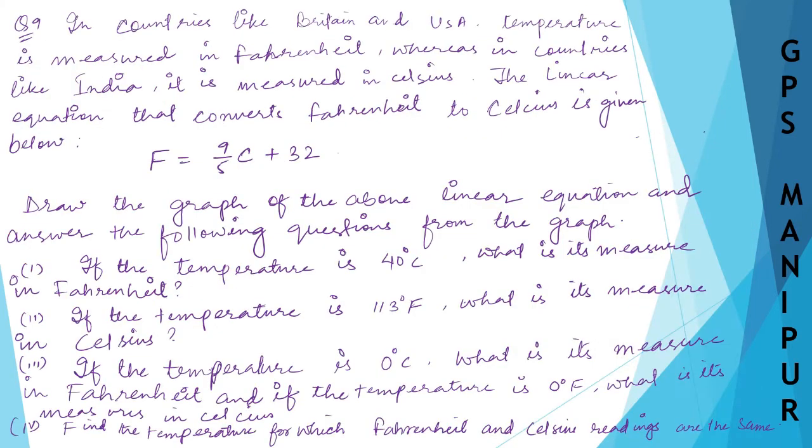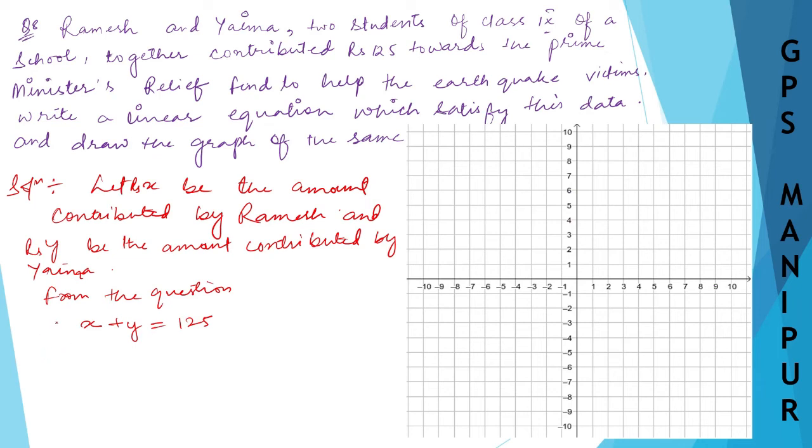We need to draw the graph. For drawing the graph, let me draw the table. This is the required equation. Now, tabulation for equation number one. Let me find x and y. You can take any number. When x is equal to y transferred to that side, it will be 125 minus y.